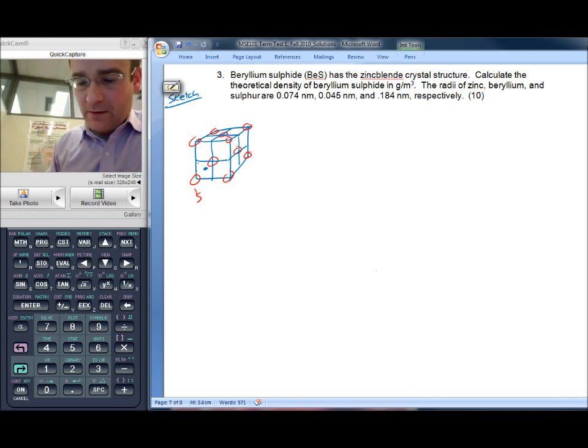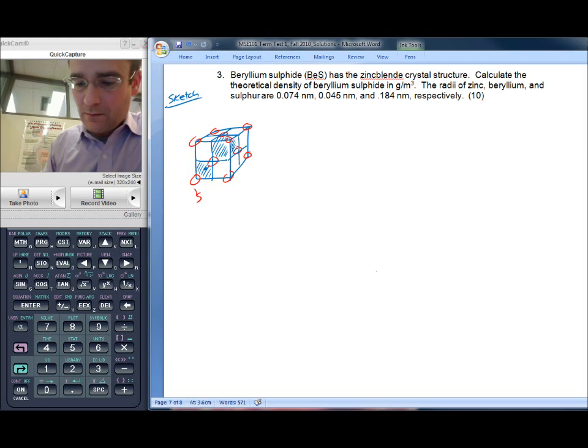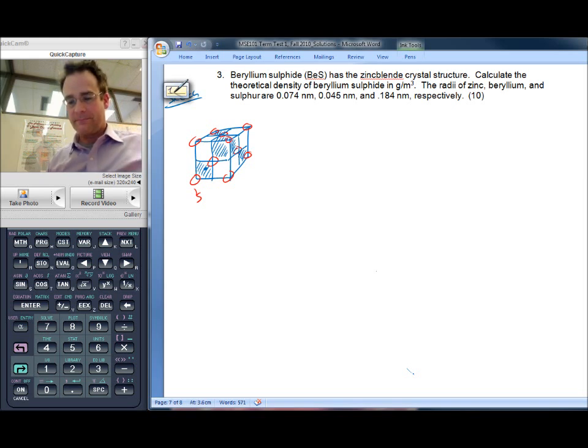And I've drawn in the front bottom left zinc. And what I'll do is I'll just shade the other subcubes that contain a zinc. So there we go. We've got the structure drawn quite well there.